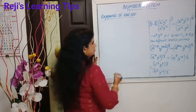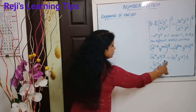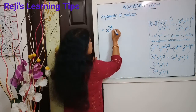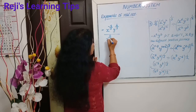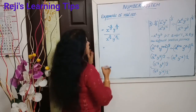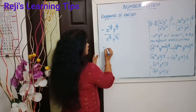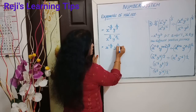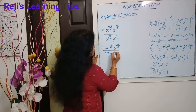Okay, then next: x raised to minus 4 by 3, y raised to 4 by 3, divided by x raised to 8 by 2, y raised to minus 6 by 2. Now we will solve this one step at a time. x raised to minus 4 by 3, y raised to 4 by 3. Then x raised to 8 by 2, that is 4, and y raised to minus 3.